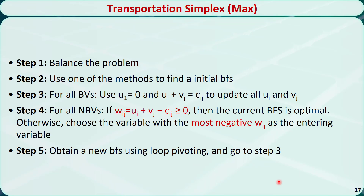For a maximization transportation problem, we can also solve it using the transportation simplex method. The only difference is in step 4: if all the wij are greater than or equal to zero, then the basic feasible solution is optimal. Otherwise, we need to choose the cell with the most negative wij as the entering variable. That's how to use the transportation simplex method to solve the transportation problem and find the optimal solution.